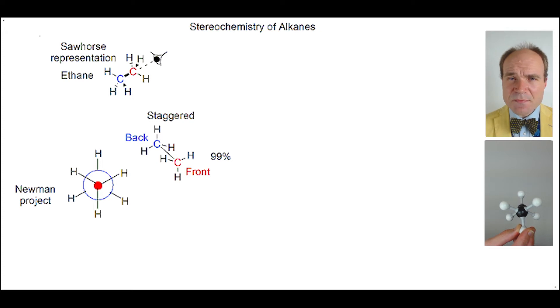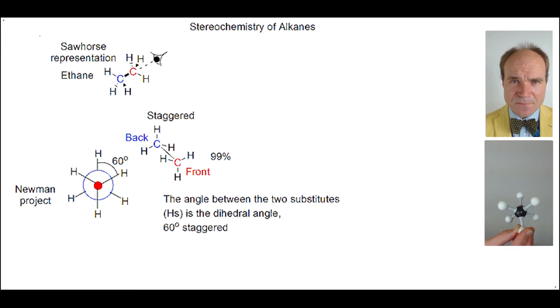Let's consider the spatial relationship between these substituents. There is an angle between the hydrogens. It's called a dihedral angle. And what we see here is where the dihedral angle is 60 degrees. And when you have a dihedral angle of 60 degrees, this is called staggered.